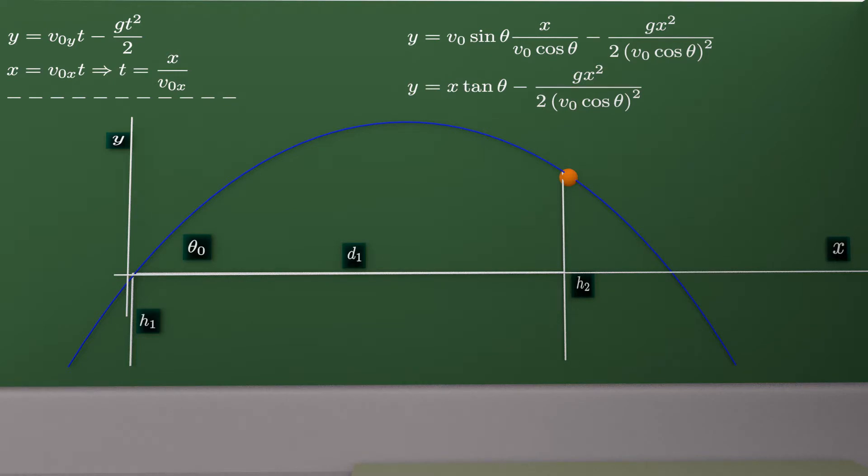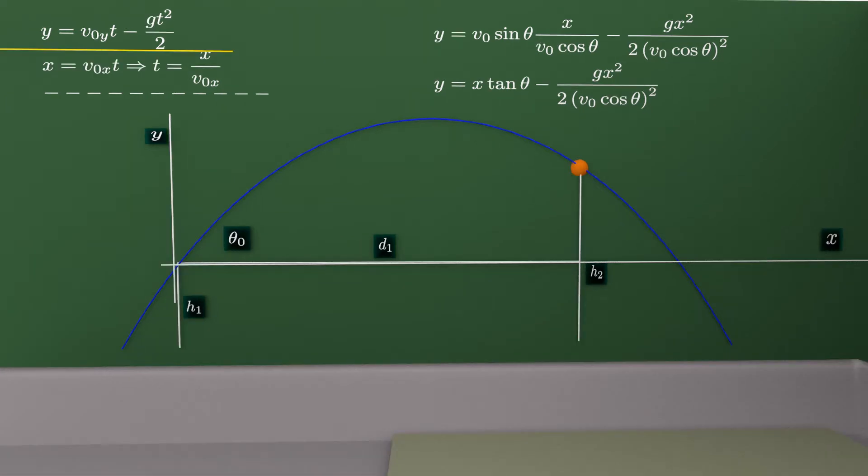Let's observe the motion along the y-axis. We have y equals v0y times t minus gt squared over 2. v0y is the horizontal component of the initial speed velocity.